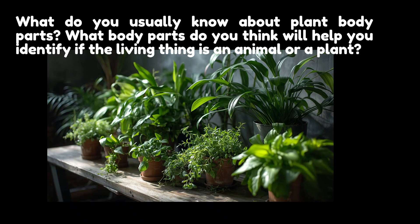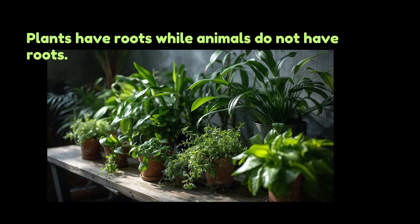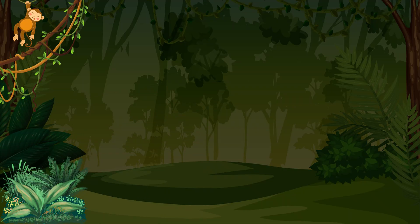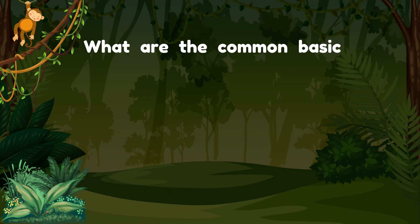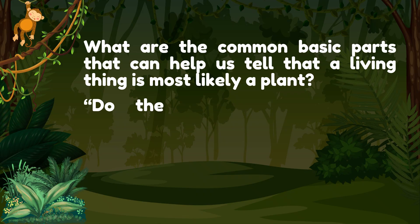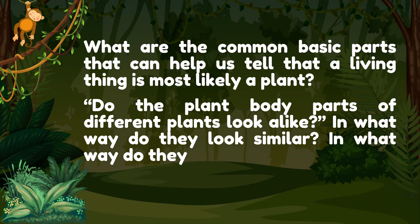What do you usually know about plants' body parts? What body parts do you think will help you identify if the living thing is an animal or plant? Any other body parts that can distinguish a plant from an animal? Plants have roots while animals do not have roots. What are the common basic parts that can help us tell that a living thing is most likely a plant? Do the plant body parts of different plants look alike? In what way do they look similar? In what way do they look different? These are some of the questions we will have in mind as we learn more about plants' body parts.